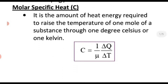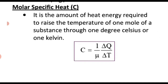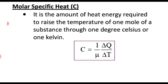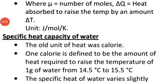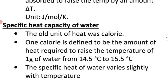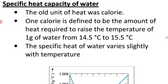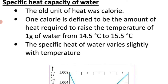Now, molar specific heat capacity of a substance is the amount of heat required to raise the temperature of 1 mole of a substance through 1 degree Celsius or 1 kelvin. Molar specific heat capacity is represented by the letter C: C = ΔQ / (μ·ΔT), where μ is the number of moles and ΔQ is the amount of heat absorbed to raise the temperature of μ moles through ΔT kelvin. The SI unit of C is joule per mole per kelvin.